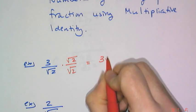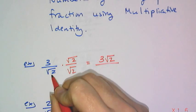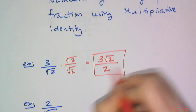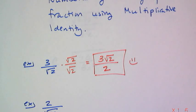On my numerator I get 3 root 2, which is fine, and then root 2 times root 2, which is just 2. And so now this has a rationalized denominator and is therefore simplified.